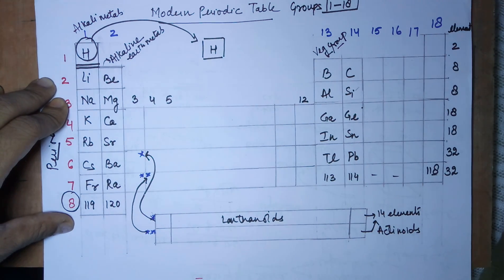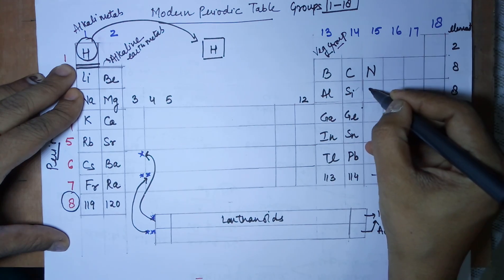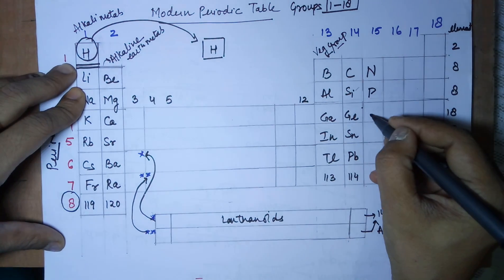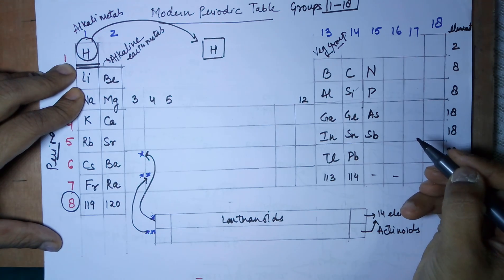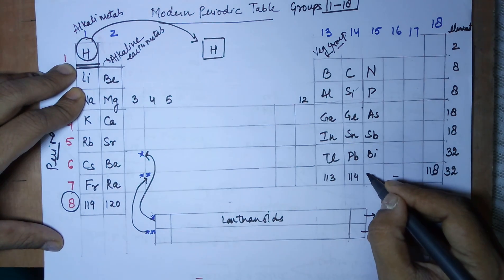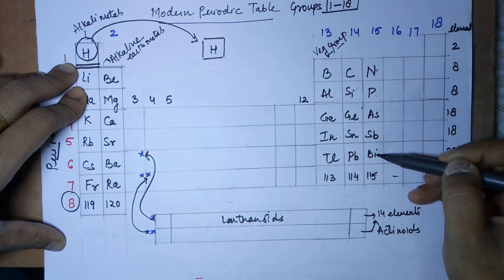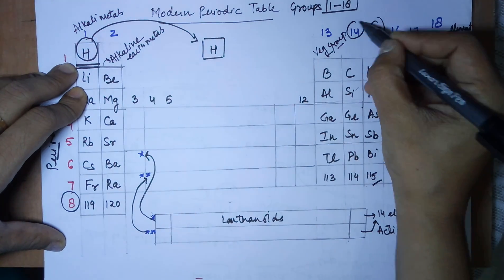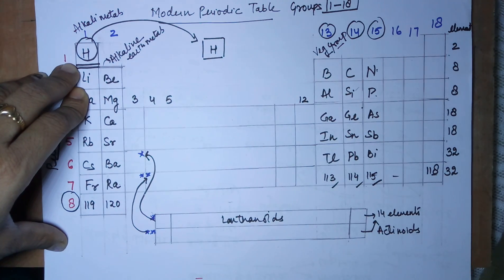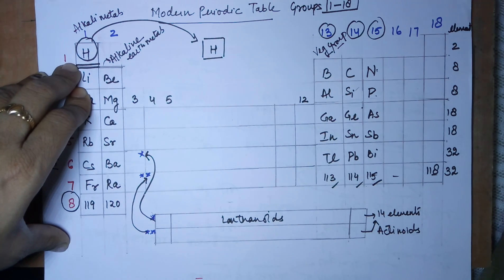Group number 15 is also called the nitrogen family. The elements are nitrogen, phosphorus, arsenic (As), antimony, and bismuth — the last element would be 115. Note: the last element of group 15 is 115, group 14 is 114, and group 13 is 113. I have two versions of the mnemonic — a censored and a non-censored version.